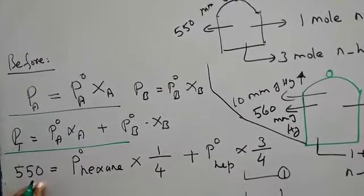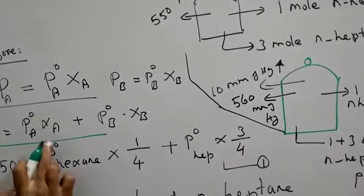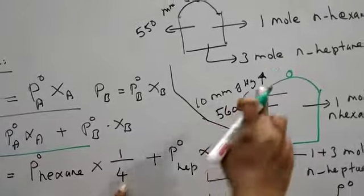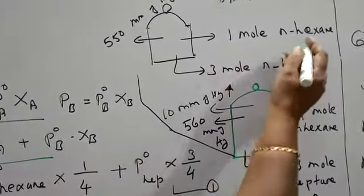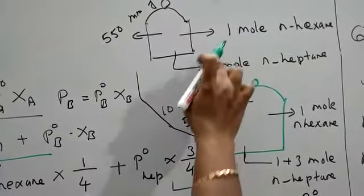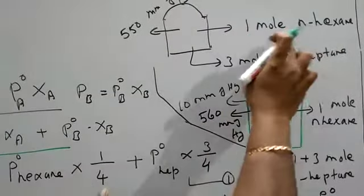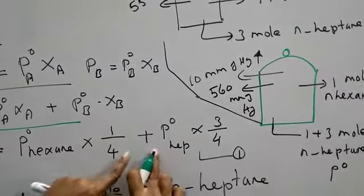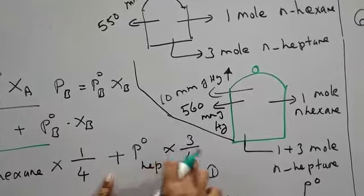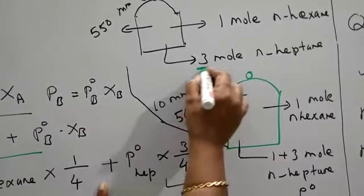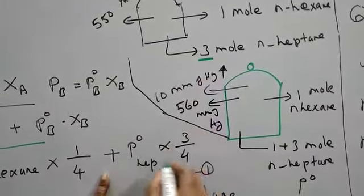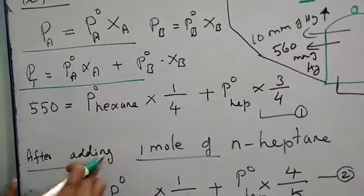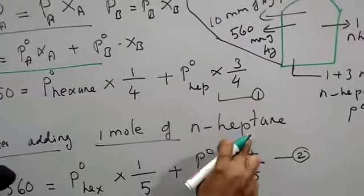Let us take the data from our sum. 550 mm of mercury equals P naught of hexane times mole fraction of hexane. You can see the diagram - mole fraction of hexane: total number of moles is 1 plus 3, which is 4. Individual moles of hexane is 1, so here it is 1 by 4. This is the mole fraction. Plus P naught of heptane times its mole fraction. Moles of heptane is 3, total moles is 1 plus 3, which is 4. So this is equation number 1.